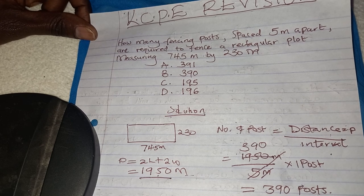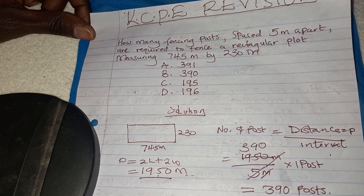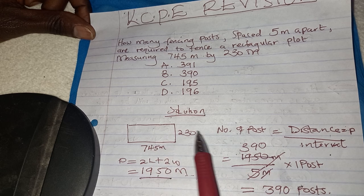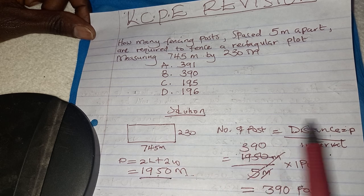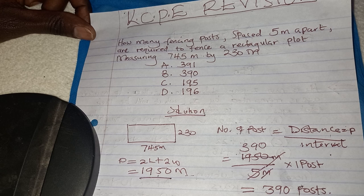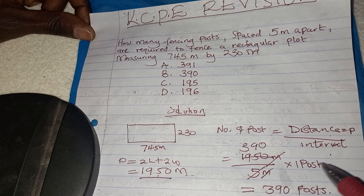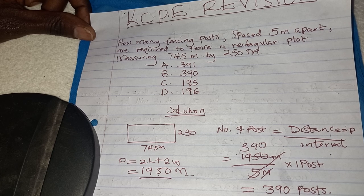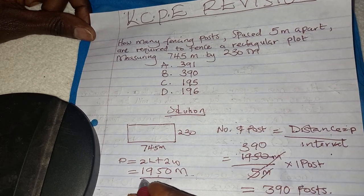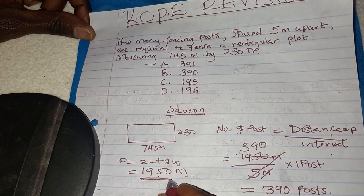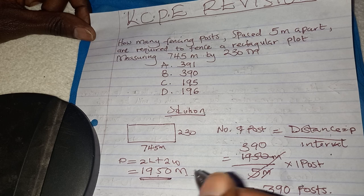It is important to note that sometimes you can be given the measurement of a plot and told there is a gate — for example, a gate measuring 2 meters width. In that case, where there is a gate, after you get the perimeter, you should subtract the width of the gate.